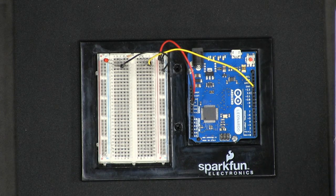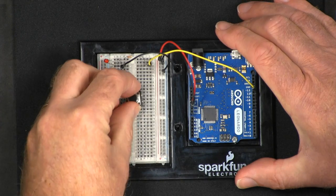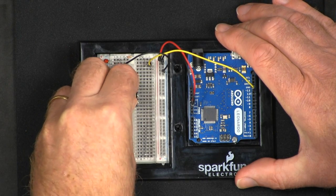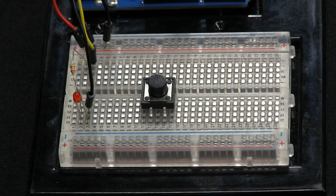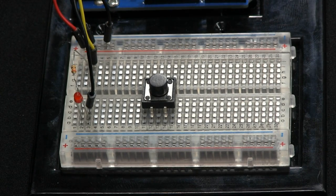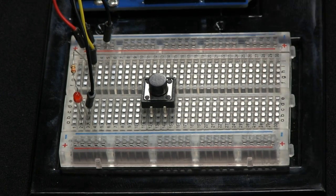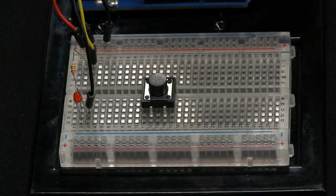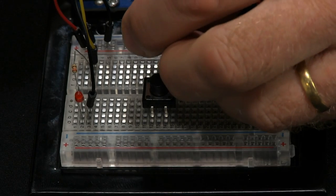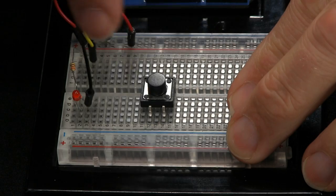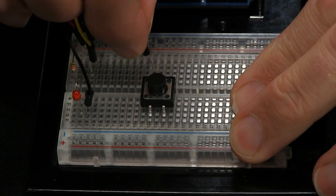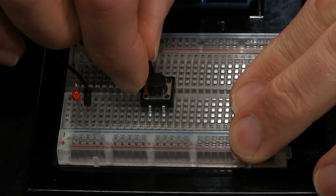So now we're going to connect up the switch. The switch we'll put in here, it has to be pressed fairly firmly so the legs connect in. Then on one side of the switch we want to connect the 5 volts. So again we'll take from the 5 volts bus at the top here and we'll connect it to that side of the switch.